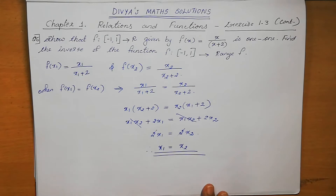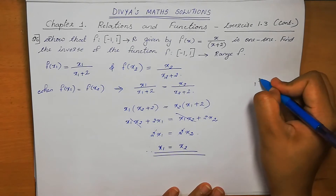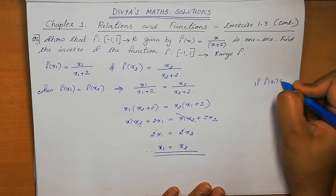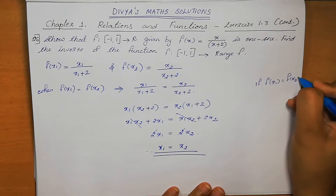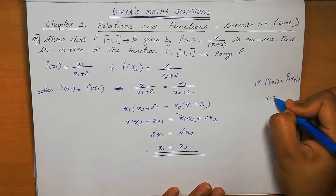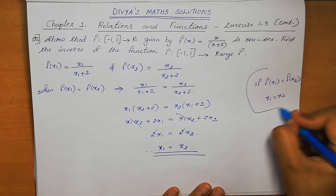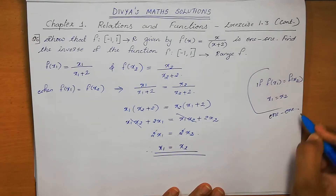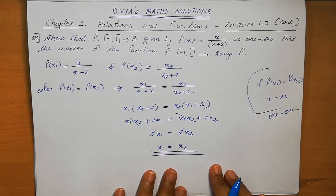x1 = x2 means what we can say — the function is 1-to-1. That is the condition. If f(x1) = f(x2) we get x1 = x2, that means we can say that the function is 1-to-1. Hence proved.